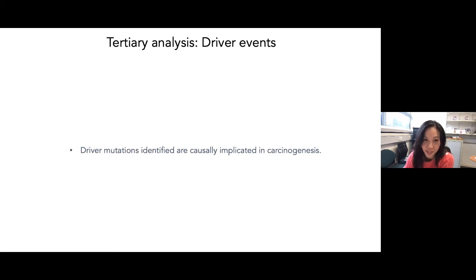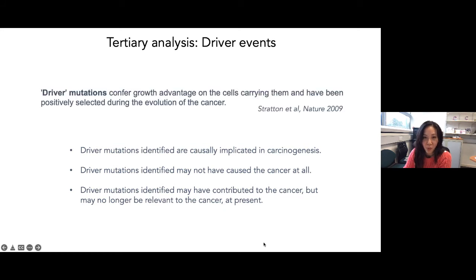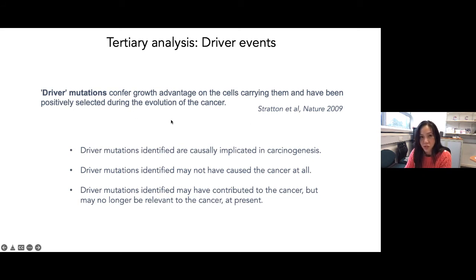Moving to tertiary analysis — driver mutations. Driver mutations confer growth advantage on cells carrying them and have been positively selected during the evolution of the cancer. The main reason we hunt them down is because they become targets for therapeutic intervention — HER2 for anti-HER2 therapies, EGFR, and so on. There are only a handful of driver mutations per cancer genome — sometimes one, sometimes up to ten — but thousands of passenger mutations.